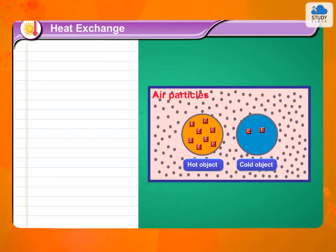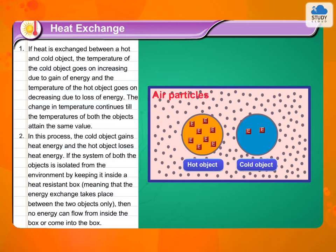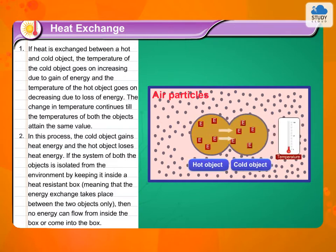Heat exchange. If heat is exchanged between a hot and cold object, the temperature of the cold object goes on increasing due to gain of energy and the temperature of the hot object goes on decreasing due to loss of energy. The change in temperature continues till the temperatures of both the objects attain the same value.